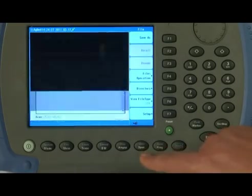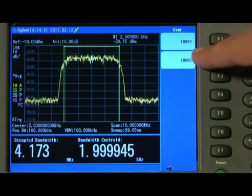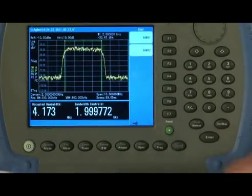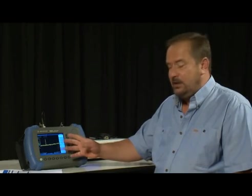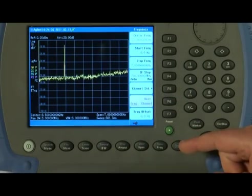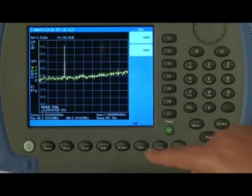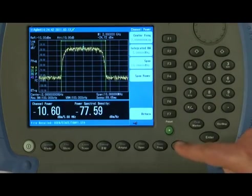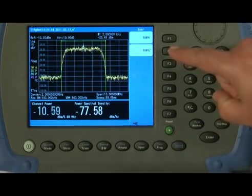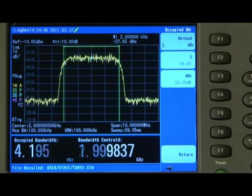And now, when I go to the User key, you will see that Tony1 and Tony2 are presets already stored in the analyzer, so if we preset the instrument back to its factory default state by pressing the green preset button, and I now go Shift User, I can immediately recall any of my favorite states with just a simple button press.